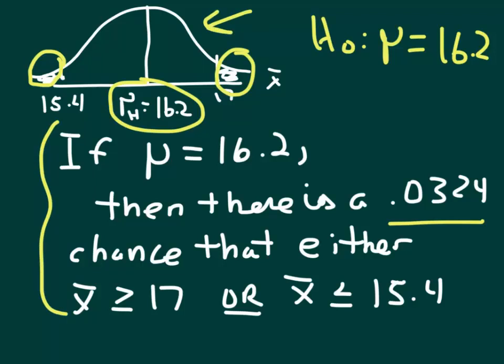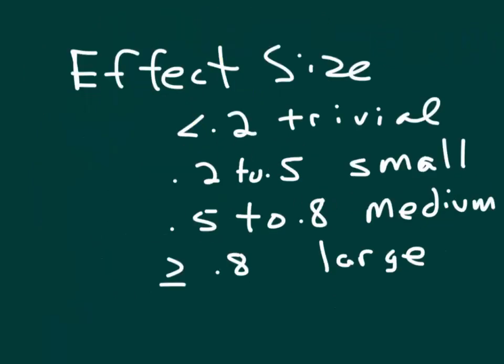That's a pattern that will continue as we move forward and look at the p-value in a variety of contexts. The effect size, we talked about this in problem one, we'll still have these same definitions of when we get an effect size defining it as trivial, small, medium, or large. You can reread those and pause here if you'd like.